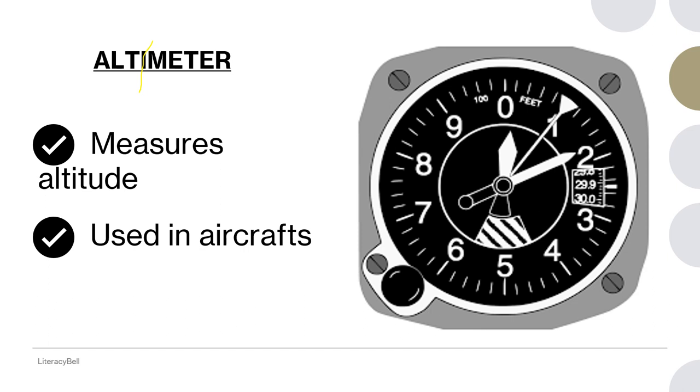Altitude is always measured in feet. Feet is a unit of length. Length is measured for height. So altimeter is used to measure altitude. It is mainly used in aircrafts.